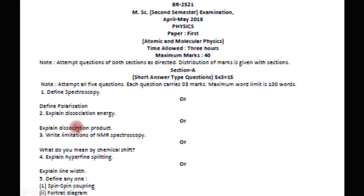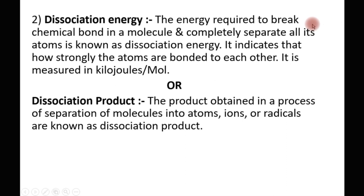The next question is: explain dissociation energy. The energy which is required to break the chemical bond in a molecule — that means, you have a molecule bonded with a chemical bond, and the energy required to completely break that bond — is known as dissociation energy. Due to this dissociation process, the molecule gets completely separated into its atoms. Dissociation energy gives us an idea of how strongly the atoms are bonded to each other, and since it is an energy, it is measured in kilojoules per mole.